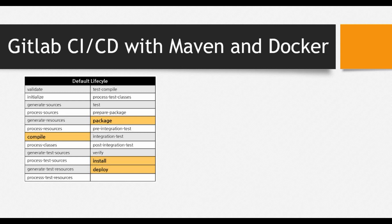To give some information about the Maven lifecycle — these are the lifecycle stages: validate, compile, test-compile, test, package, verify, install, and deploy. There are different stages in the Maven lifecycle, and you can define which stages you want in your pipeline.